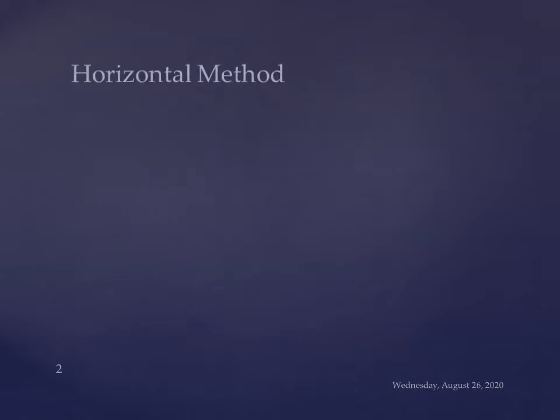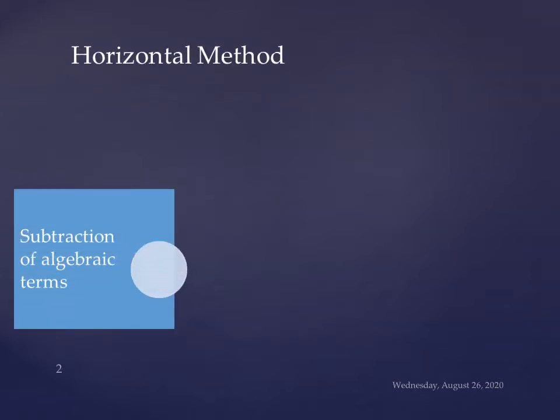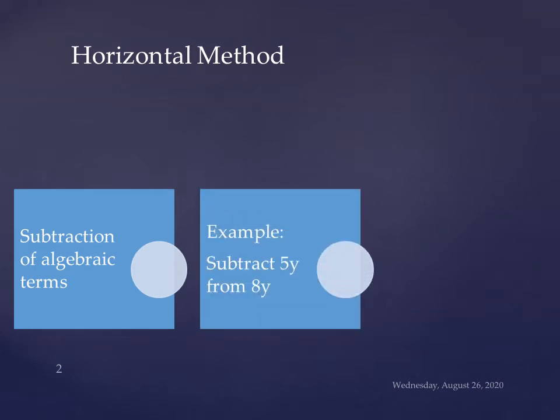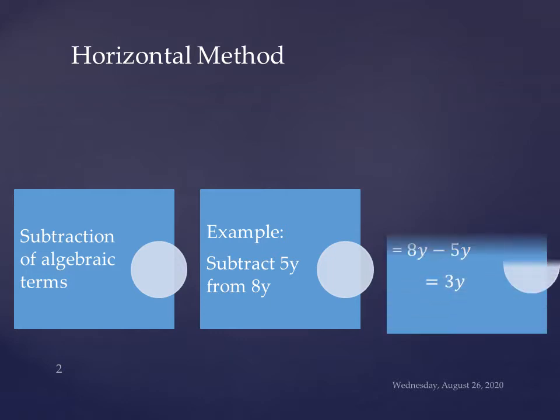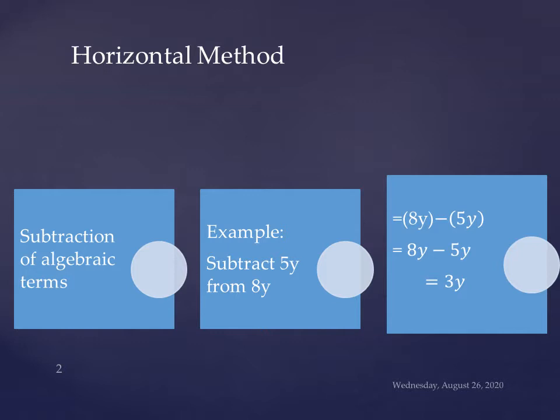This is a horizontal method for subtraction of algebraic terms. In this question, subtract 5y from 8y. We will write 8y first and 5y in the second bracket. And between the brackets there will be minus because of the subtraction.